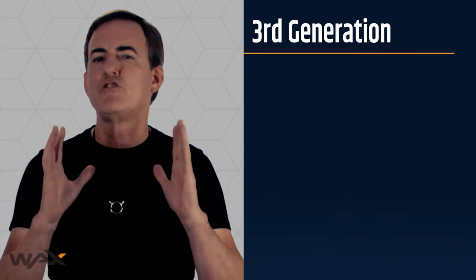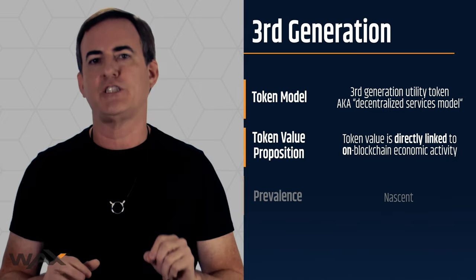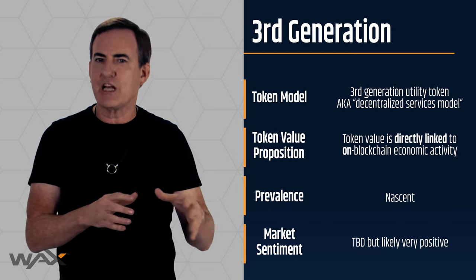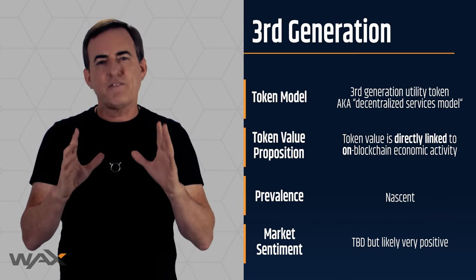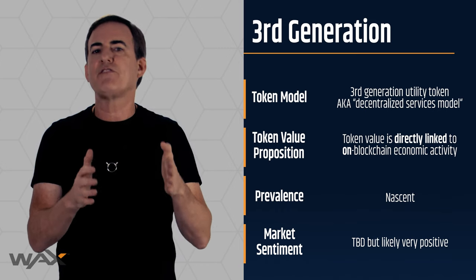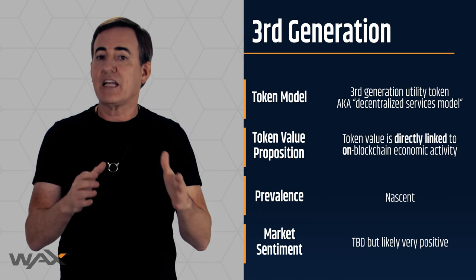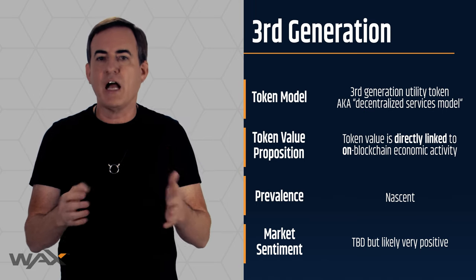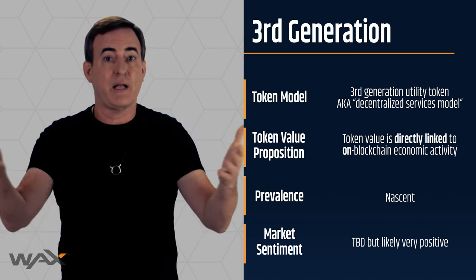I think we're going to see a pretty rapid movement into third generation utility tokens. The hallmark of third generation utility tokens is this: the token value is directly linked to on-blockchain economic activity. Third generation utility tokens differ from second generation in two critical respects. First, the economic activity being shared with token holders is directly from on-chain activity, and that economic activity is transparent — it's transparent because it's on the blockchain, not going on somewhere else like a centralized exchange.